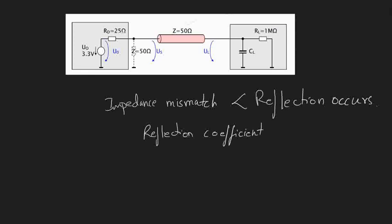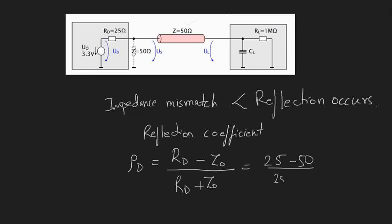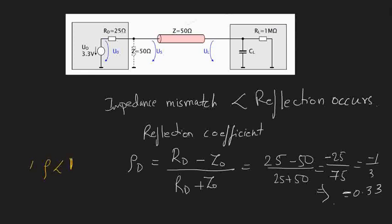The formula for the reflection coefficient — if I am calculating it at the transmitter side — is: rho of d equals rd (the driver impedance) minus z0, divided by rd plus z0. Z0 is 50 ohms, the transmission line impedance. In this given example, it is 25 minus 50 upon 25 plus 50, which gives 25 by 75, equal to 1 by 3, that is 0.33 — and it is a negative value.